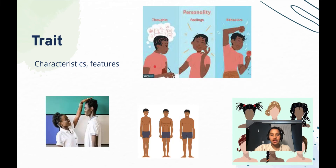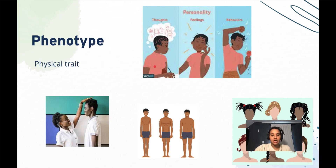A trait is a characteristic or a feature. These can be physical traits like your height, your hair texture, or other traits like diseases, diabetes, or even your personality. Your phenotype — a word that's going to come up a lot in this lesson sequence — is your physical trait. When you see the word phenotype, think of traits; it's the same interchangeable word.